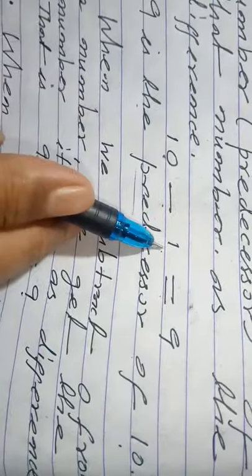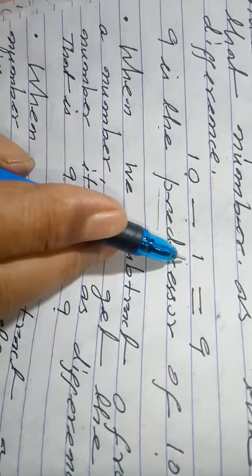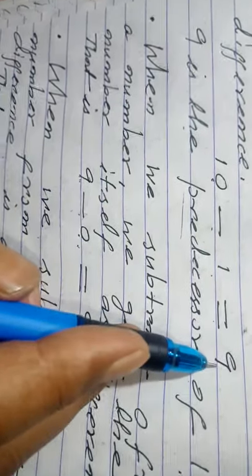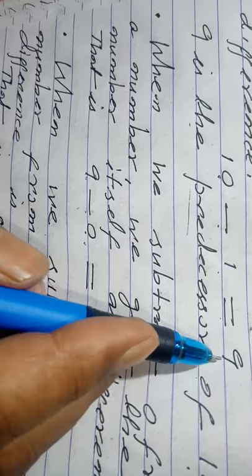10 minus 1. When you subtract 1 from a number, the predecessor of that number will come.